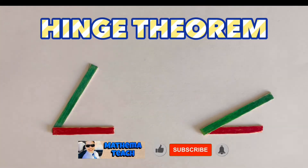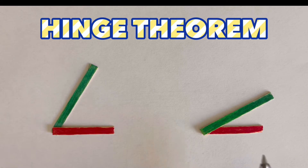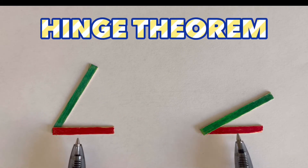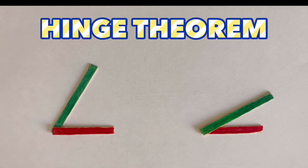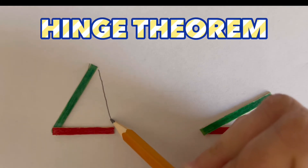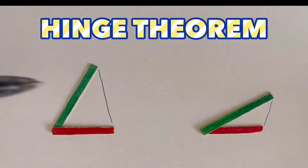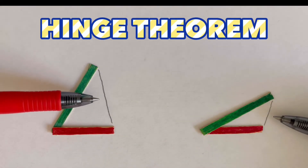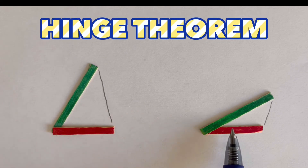Comparing this to the Hinge Theorem: the two green sides are congruent and the two red sides are congruent. If two triangles have two congruent sides, the one with a larger included angle has the longer third side. Here, the bigger opening means the third side across from it is longer, and the smaller opening means it is shorter.